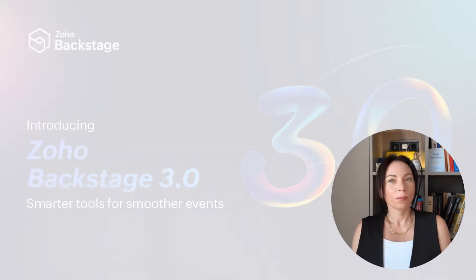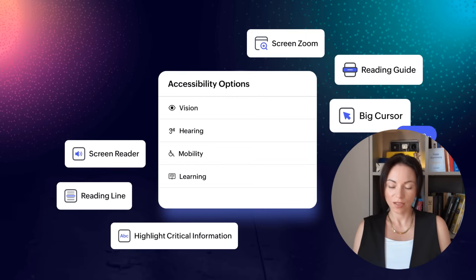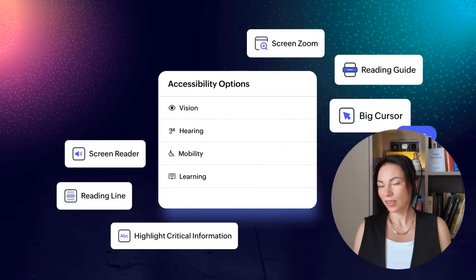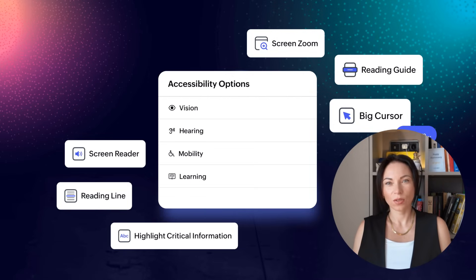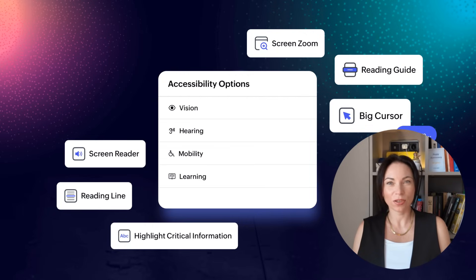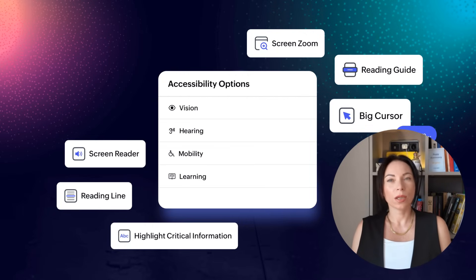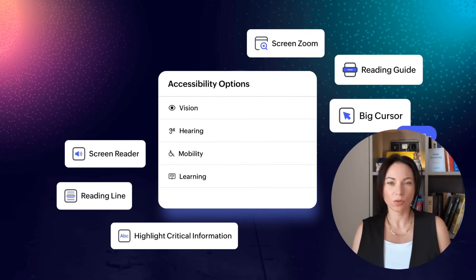Creating inclusive event experiences is not just thoughtful, it's essential. Zoho Backstage 3 introduces built-in accessibility features that cater to a diverse range of attendees, including those with vision, hearing, mobility, and learning differences. From high contrast modes to full keyboard navigation and critical info highlights, these tools ensure your events are more inclusive and accessible for everyone.